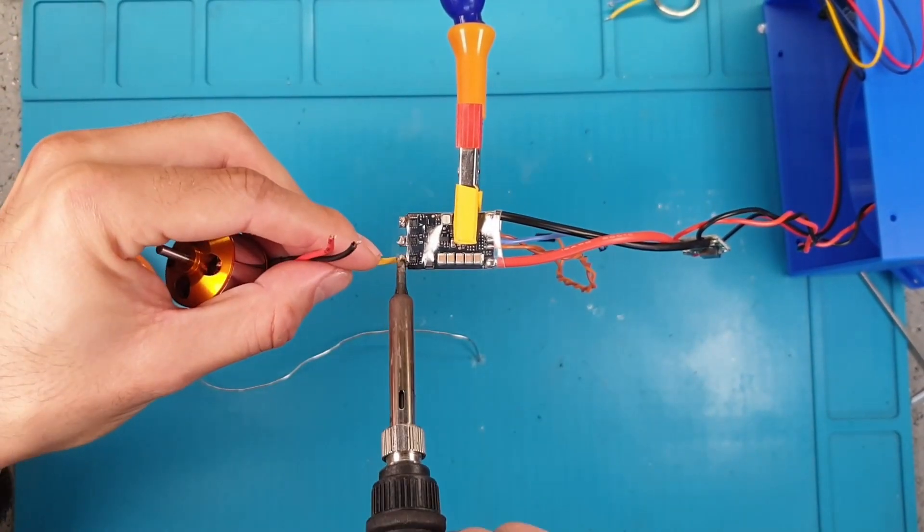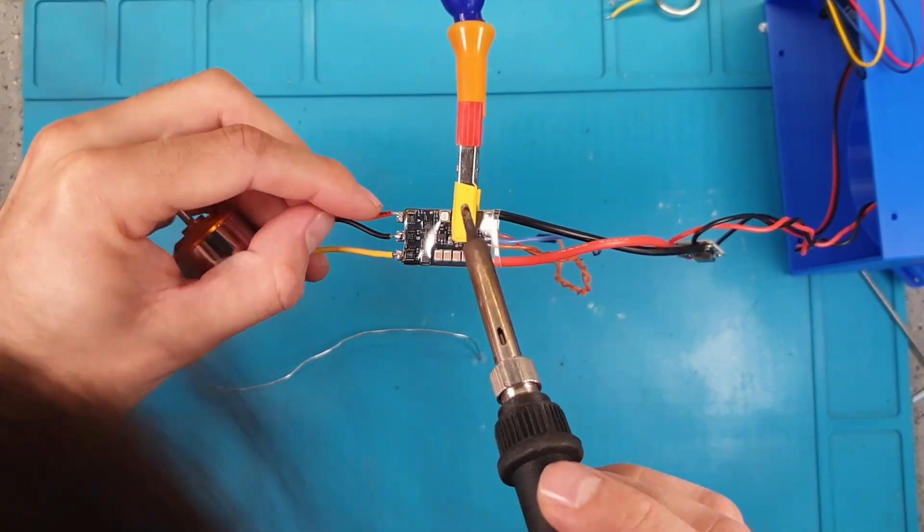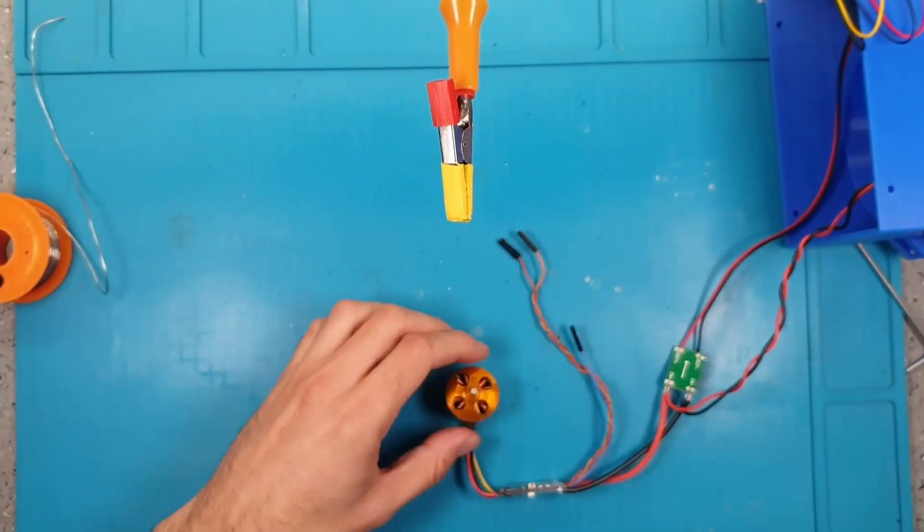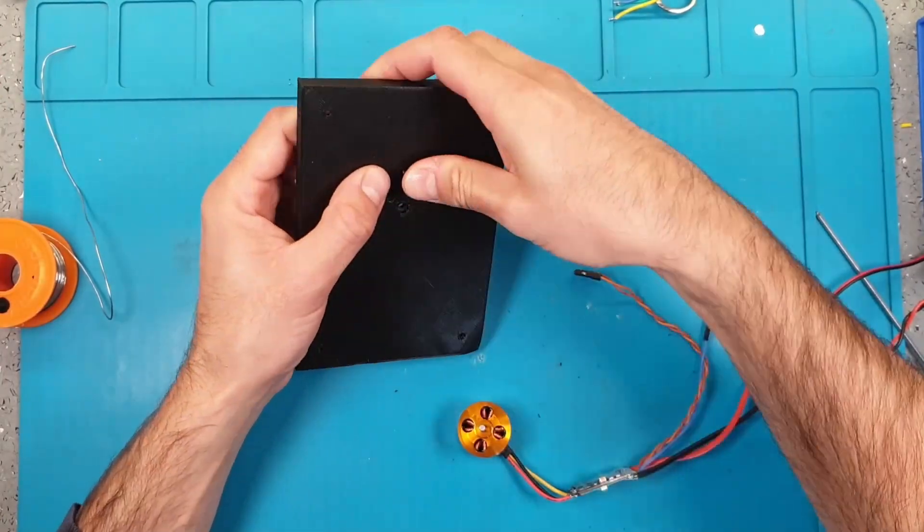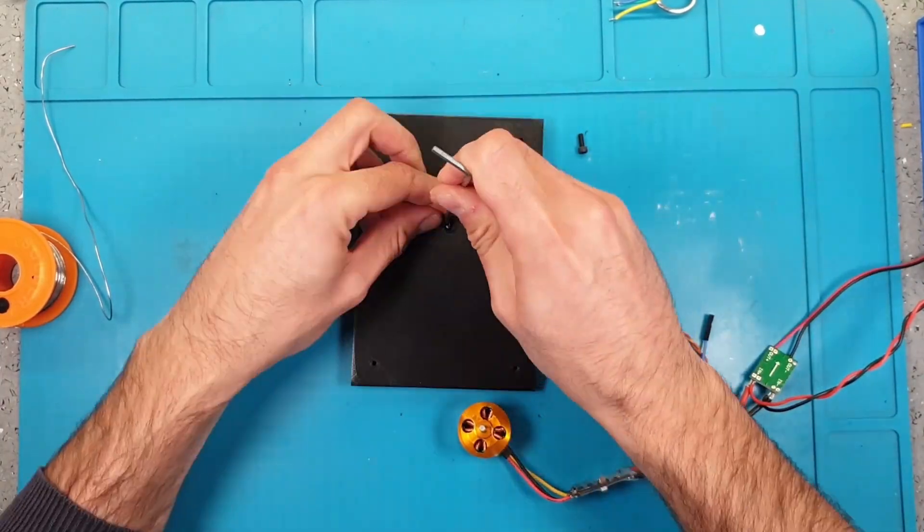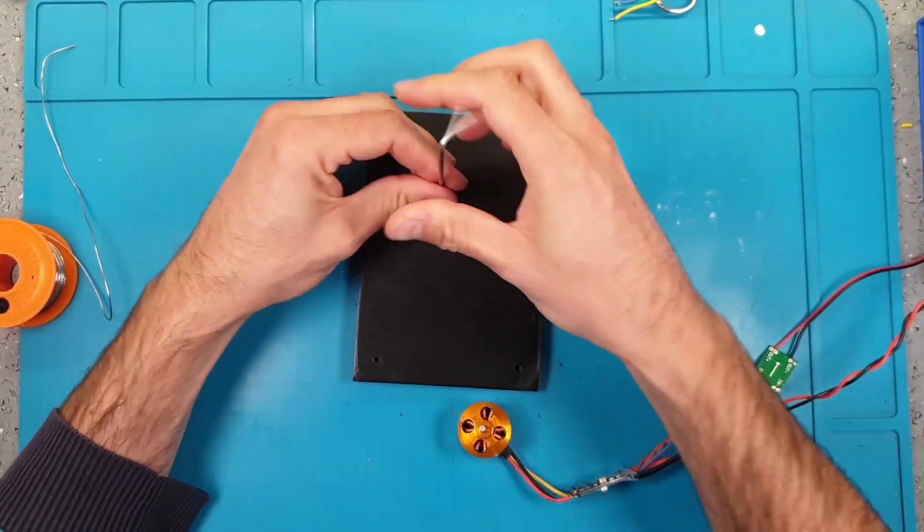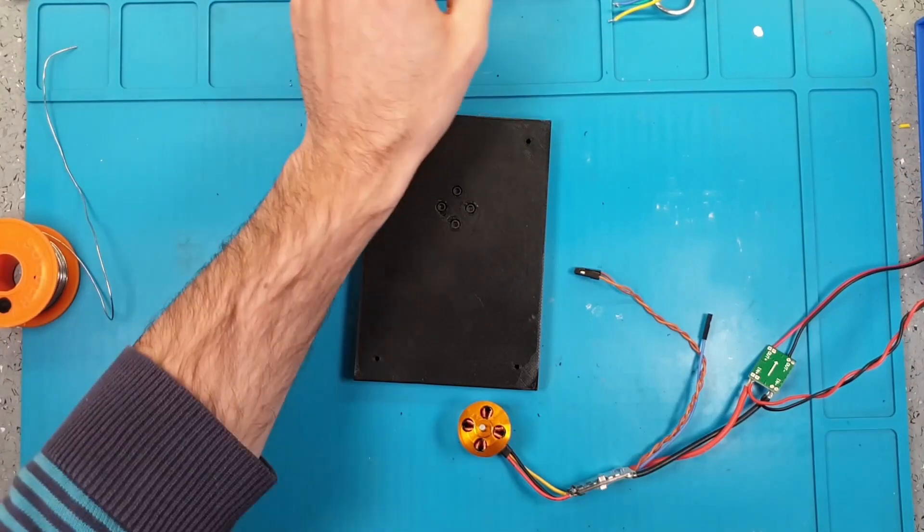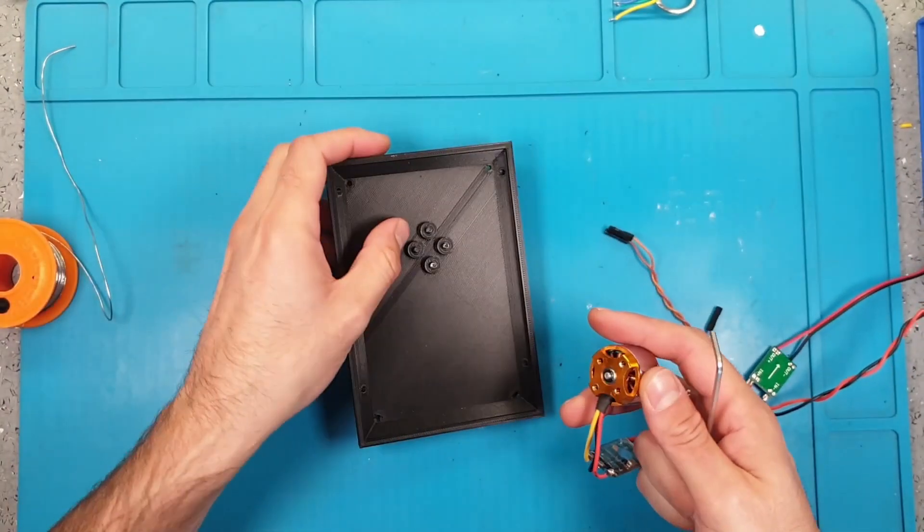Pre-tinting the ESC solder pads might help to solder the motor cables. Note that the motor sits in a specific orientation.